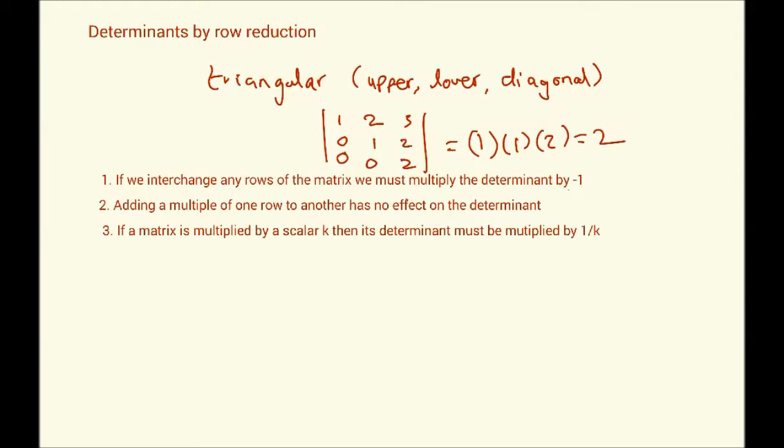Okay, so if a matrix is multiplied by a scalar k, then its determinant must be multiplied by one over k. So, let me explain, let me explain all of these by means of an example where we will try to calculate the determinant of a matrix.